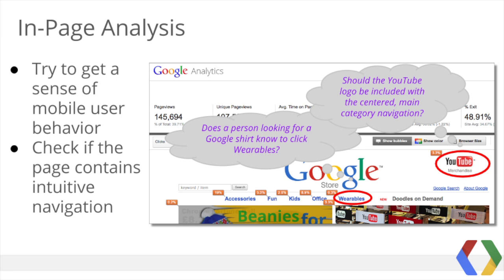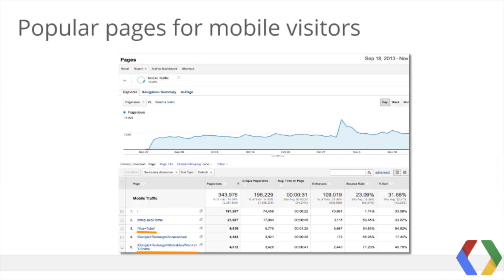It's also useful to look at in-page analysis to get a sense of mobile user behavior. When we look at the main shopping page, we can see the percentage of clicks to each of the links. Check if the page contains intuitive navigation. Given common site search queries like shirts and YouTube, does the page content and navigation satisfy the user intent? Does a person looking for a Google shirt know to click wearables? If YouTube merchandise is extremely popular, should the logo be included with the main category navigation? Looking at pages in Google Analytics segmented by mobile traffic, the five most popular pages by views confirm that visitors are interested in t-shirts and YouTube merchandise.